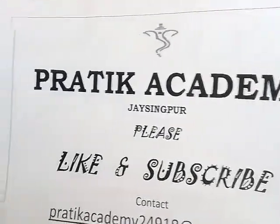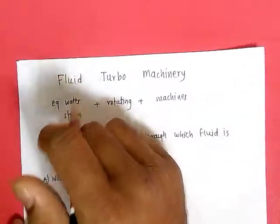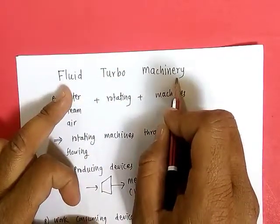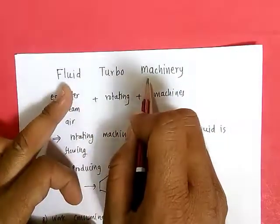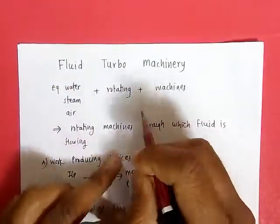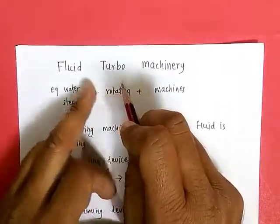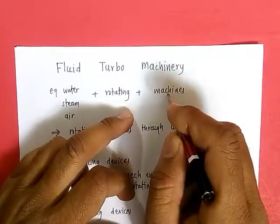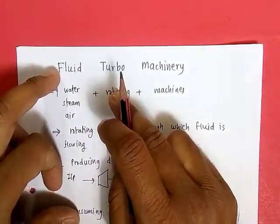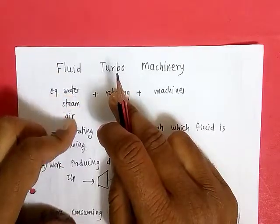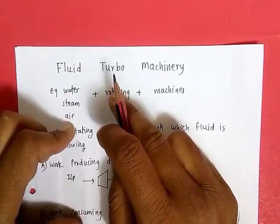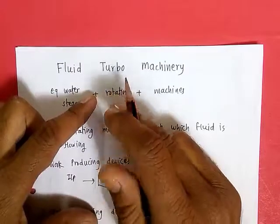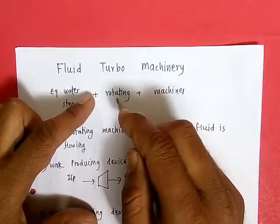Our subject is fluid turbo machinery. This total word is made up of three small words: machinery, turbo, and fluid. Let's see them one by one. What is meant by machinery? It is simply machines. Then what is meant by fluid? The substance which can flow — for example, water, steam, or air or gas. Anything which can flow comes under this category.